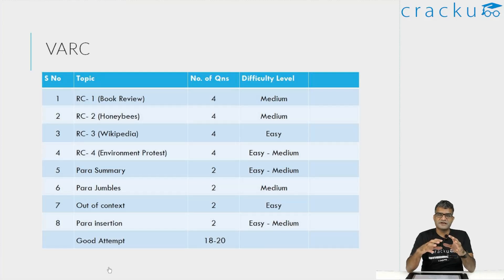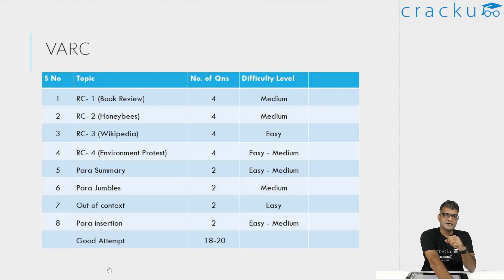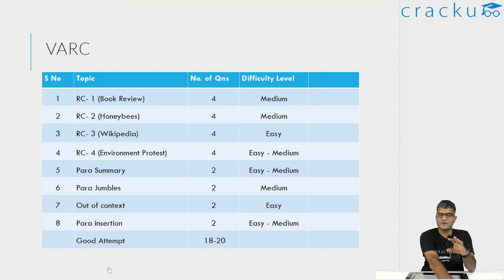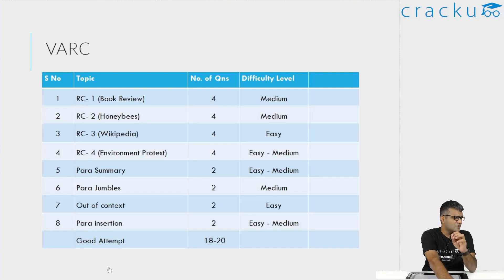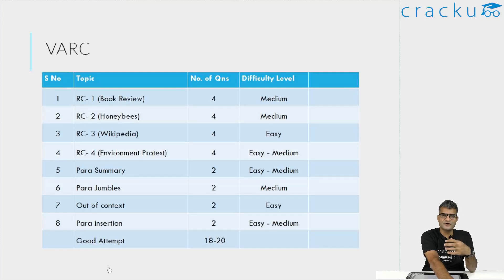At least three out of the four RCs were related to current affairs. If you look at 1984, on some level you can look at freedom of expression, cancel culture. The climate activism RC is also a current affairs kind of thing. So it was not difficult to really focus and concentrate. The only RC involving honeybees, a science and technology topic, was slightly more difficult, but otherwise I was able to concentrate properly.